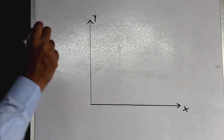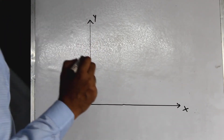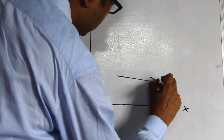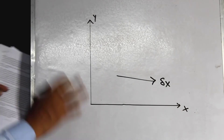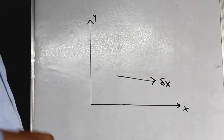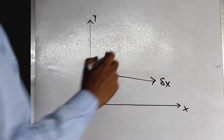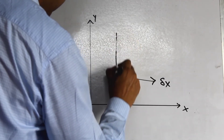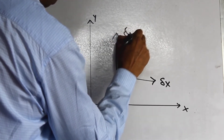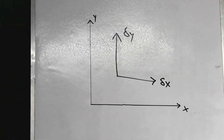Let us consider the first translational degree of freedom, delta x. You can see that I can draw it easily on the board, so it is an in-plane degree of freedom. Let us consider the second translational degree of freedom, delta y, and again you will see that I can draw this easily on this board, so this too is an in-plane degree of freedom.